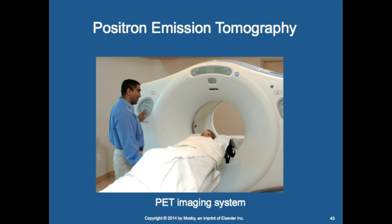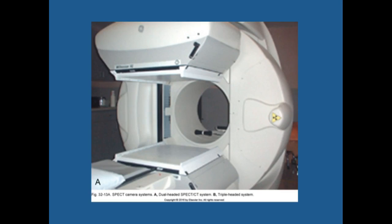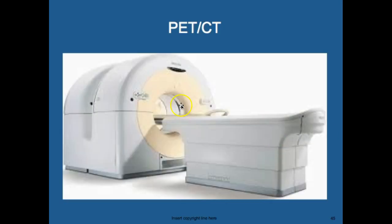Positron emission tomography, also known as PET scanning, uses a hybrid scanner. Here's a unit that resembles an MRI — it's really long. The gamma camera is in the front and the CT scanner is in the back. Patients lie within the scanner for an hour to an hour and a half depending on the study.